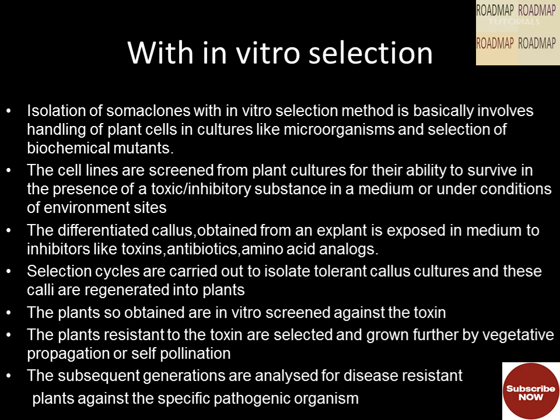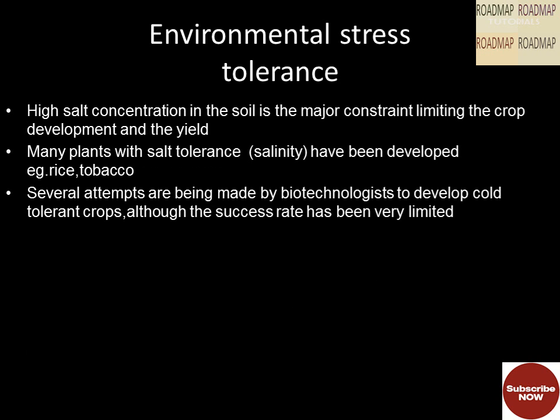Subsequent generations are analyzed for disease-resistant plants against specific pathogenic organisms. Regarding environmental stress tolerance, high salt concentration in the soil is a major constraint limiting crop development. Many plants with salt tolerance (salinity resistance) have been developed, for example rice and tobacco. Several attempts are being made by biotechnologists to develop cold-tolerant crops, although the success rate has been very limited.